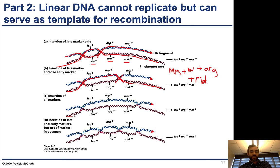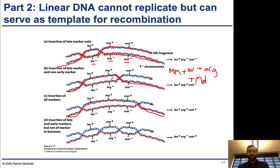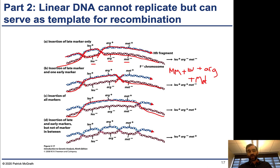You can also have crossovers at different positions — for example, transforming both leu- and arg- to wild type, so the individual would only need methionine supplemented in minimal media to grow. Or crossovers could occur such that all three genes are transformed. There's a lot of randomness and flexibility to where crossovers occur, and what exactly gets transformed is determined by the location of those crossovers — similar to chapter five, where there's randomness to crossover location in eukaryotic cells.